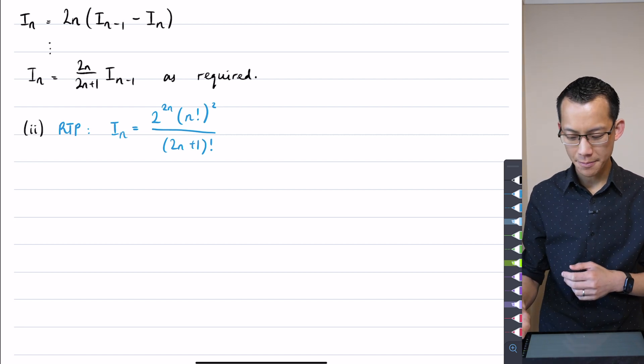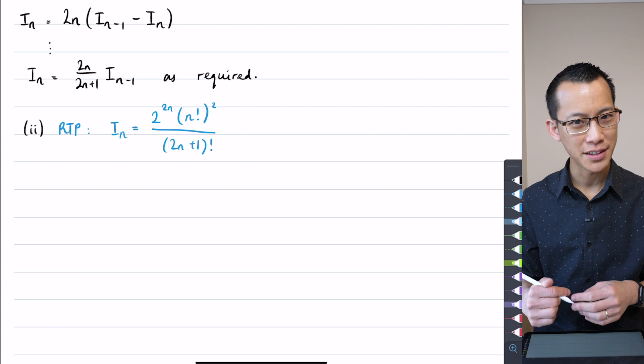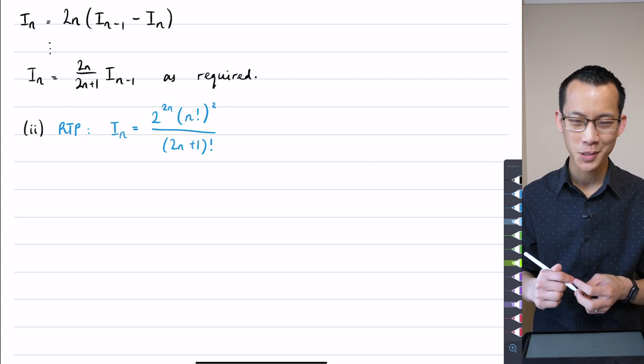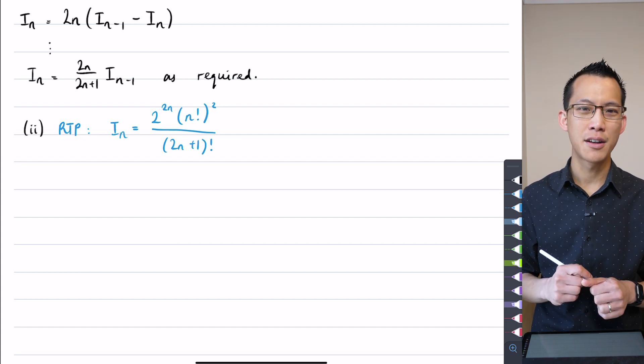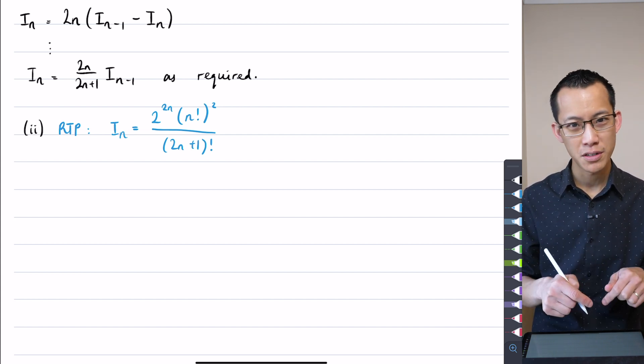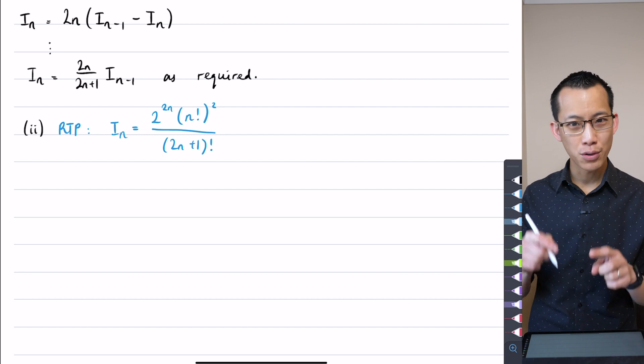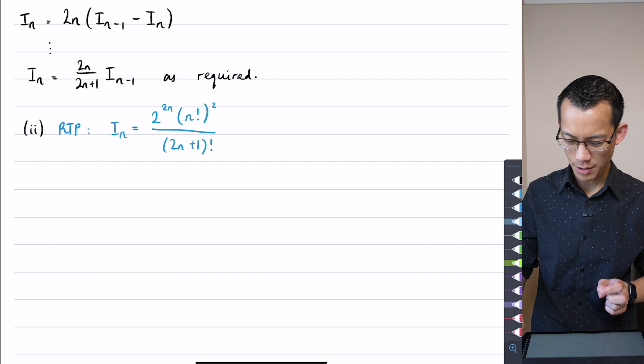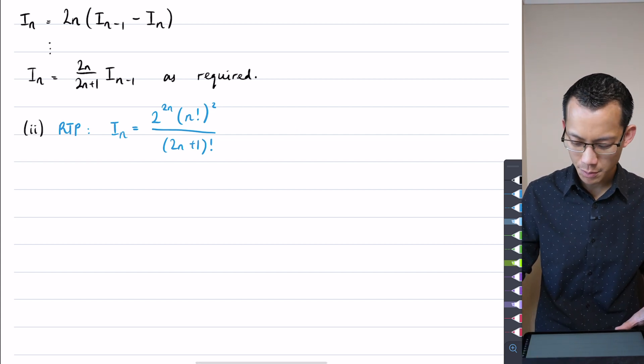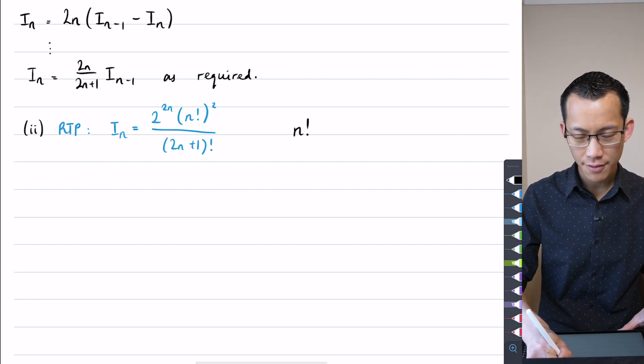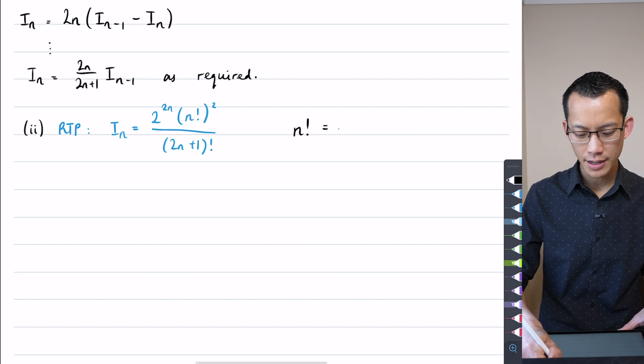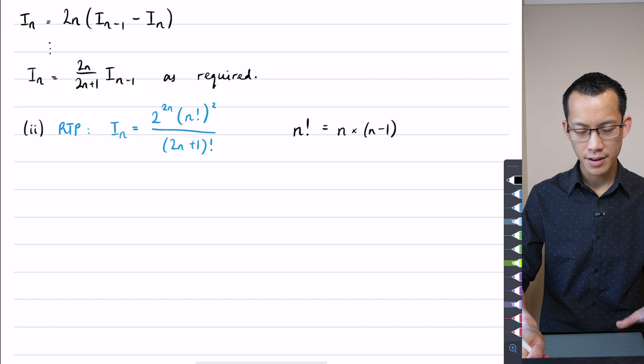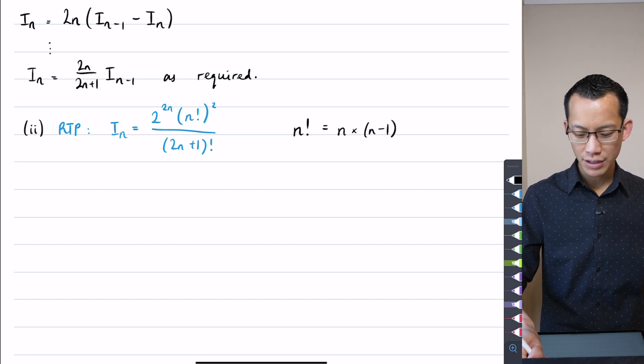The second thing that is worth pointing out is that actually, even though factorials are weird, you're like, this is not perms and combs where I normally see factorials, we shouldn't be that surprised that a factorial will appear in a recurrence relation because factorials themselves are recurrence relations, aren't they? Think about this. What is the definition of n factorial?